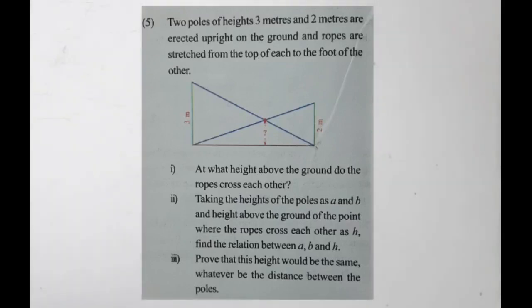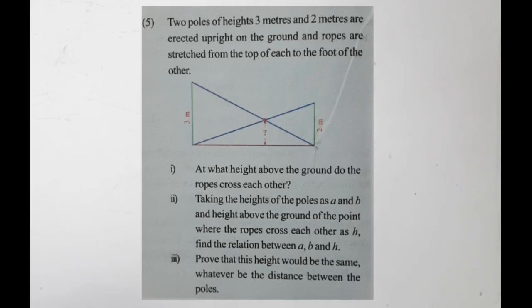Two poles of different heights are erected upright on the ground and ropes are stretched from the top of each to the foot of the other. First question: at what height above the ground do the ropes cross each other? Second question: taking the heights of the poles as A and B and the height above the ground of the point where the ropes cross each other as H, find the relation between A, B and H.